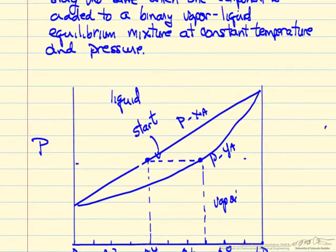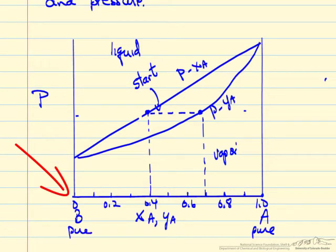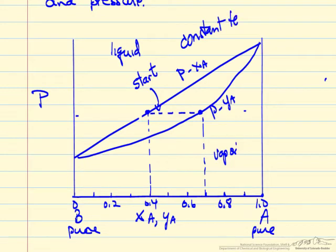What we're looking at is this type of diagram: pressure versus mole fraction of component A. Here is pure component A and here is pure component B. Plotting pressure here, the entire diagram is at a fixed temperature.